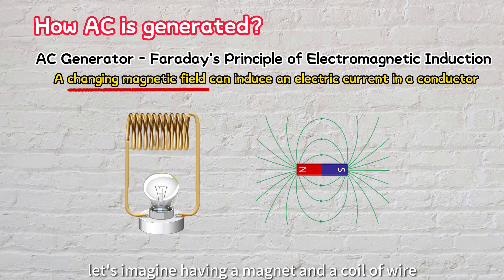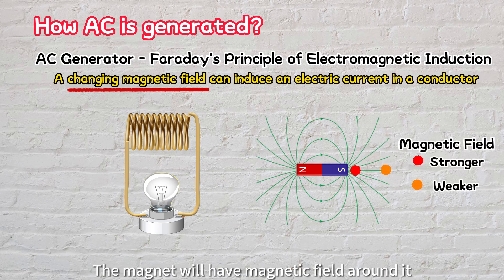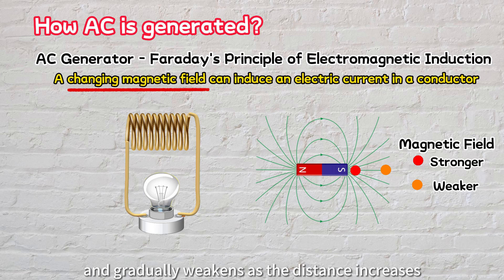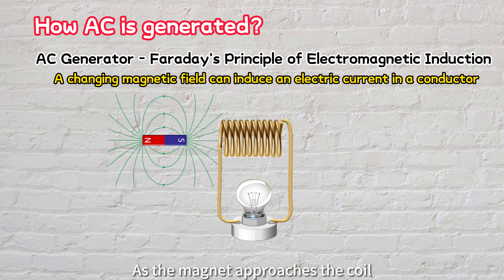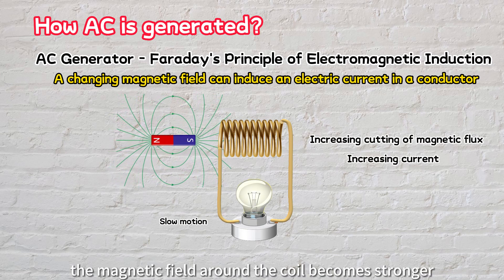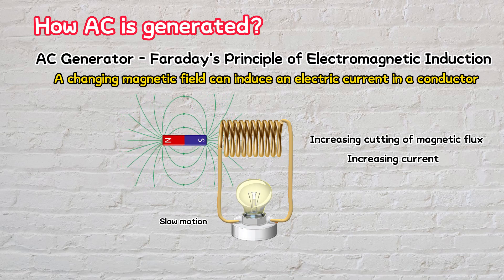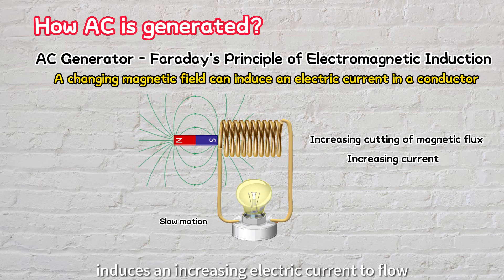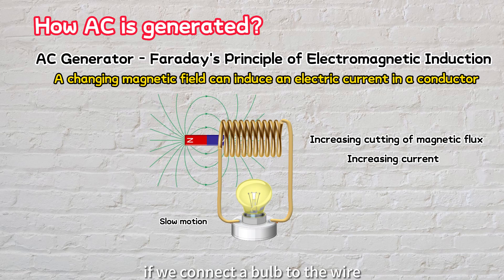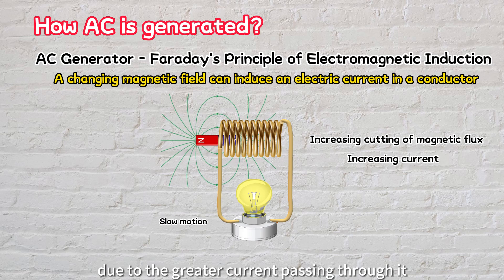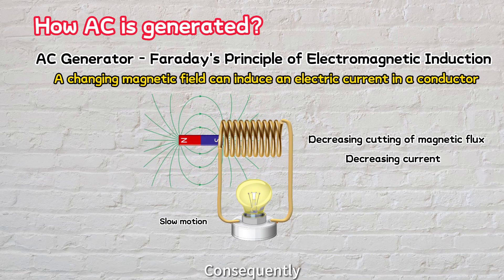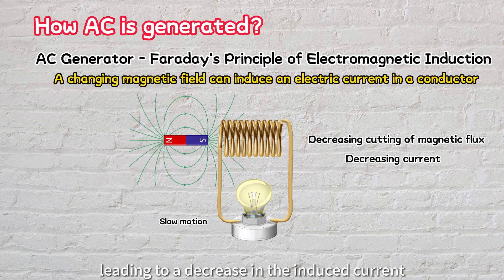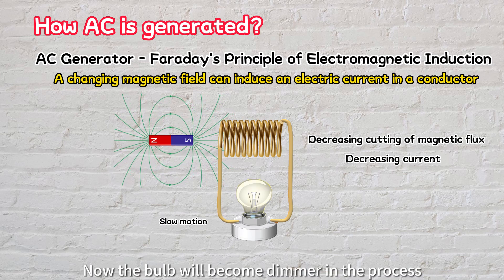To understand this concept, let's imagine having a magnet and a coil of wire. The magnet will have a magnetic field around it, which is strongest when closest to the magnet and gradually weakens as the distance increases. When we move the magnet back and forth near the wire coil, something interesting happens. As the magnet approaches the coil, the magnetic field around the coil becomes stronger and more magnetic field lines cut across the wire. This change in the magnetic field induces an increasing electric current to flow through the wire. If we connect a bulb to the wire, it will become brighter due to the greater current passing through it. On the other hand, when we move the magnet away from the coil, the magnetic field becomes weaker, fewer magnetic field lines cut across the wire, leading to a decrease in the induced current, and the bulb will become dimmer. It's important to note that when the magnet is not moving, even if it is placed very close to the wire coil, the magnetic field remains unchanged, and no current is induced in the wire.